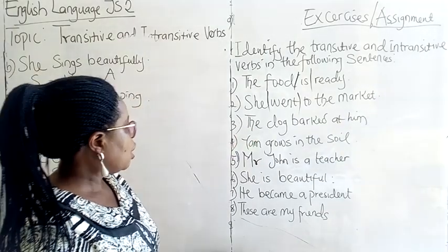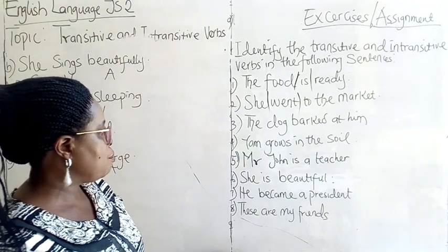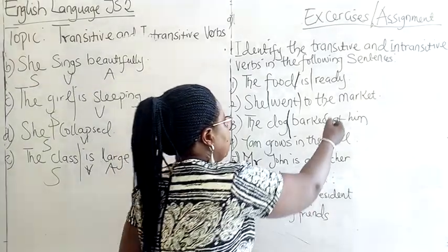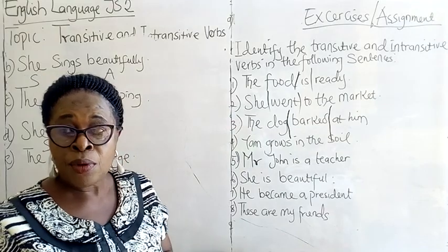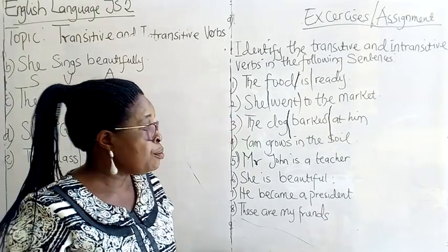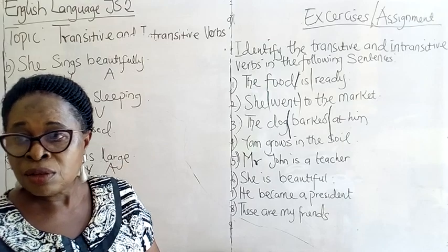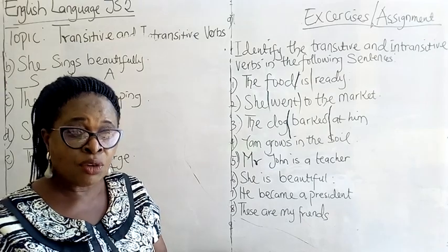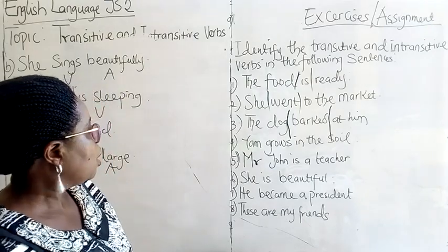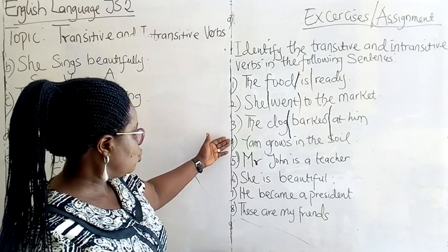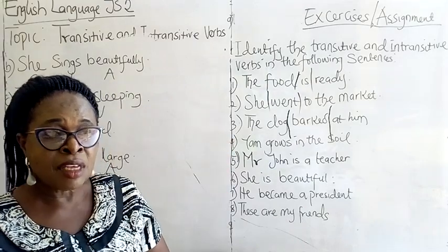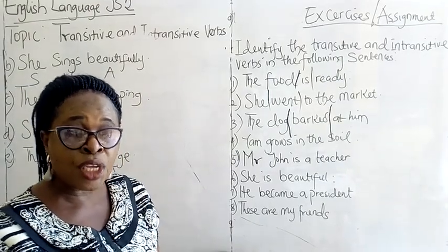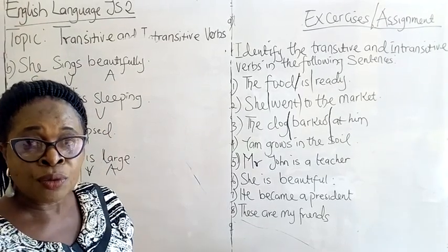Number three: The dog barks at him. We have 'the dog' as the subject — the doer — 'barks' as the verb, and 'at him' as the object. So, number three sentence is in the transitive form. Then, you are going to do number four through number eight as an assignment and submit to your email address for us to do the correction and post back to you. Thank you.